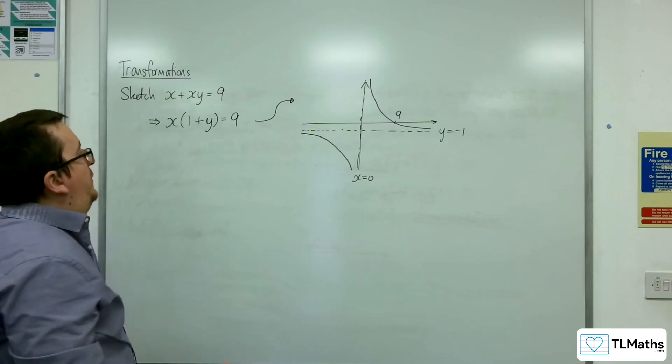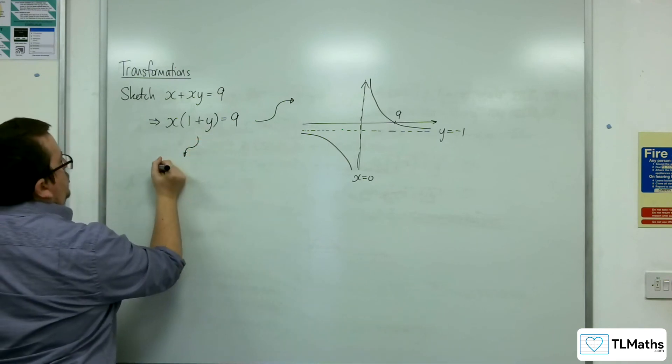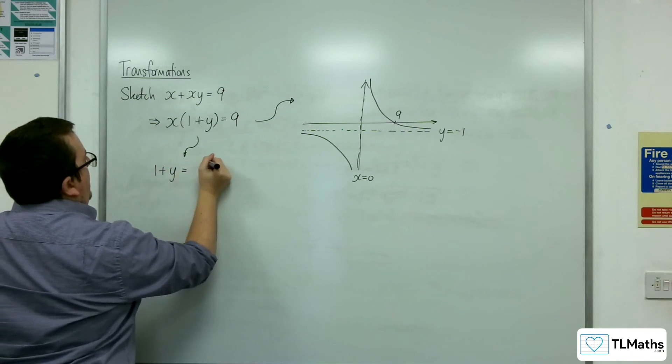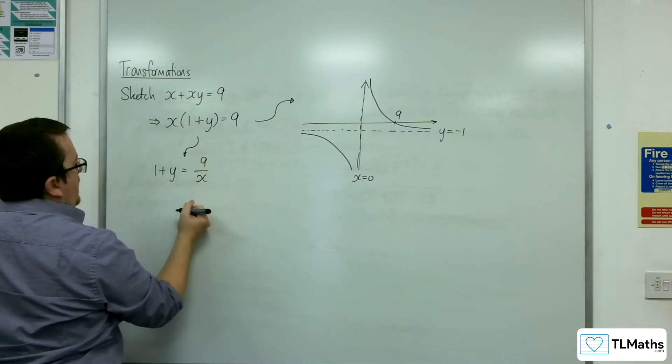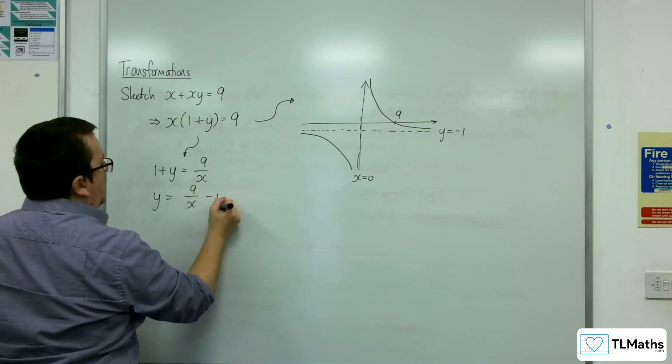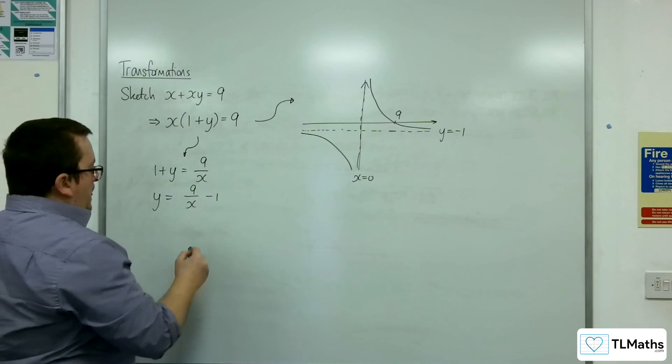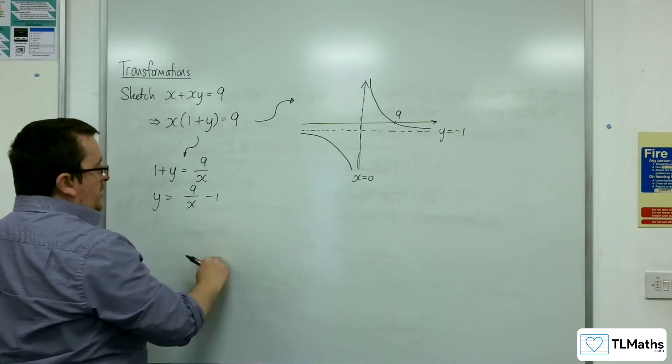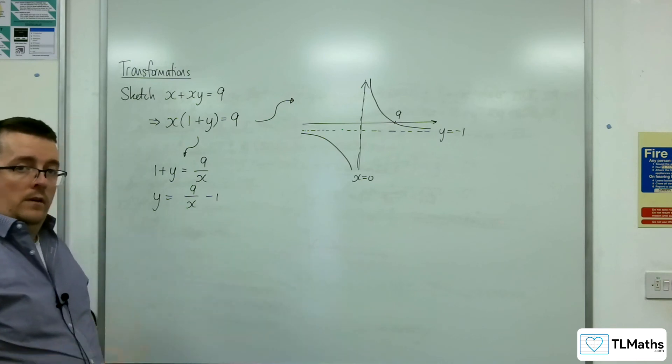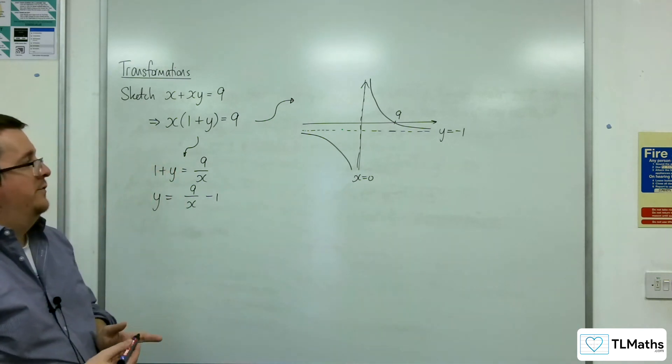My gut instinct, as I said, would be probably to rearrange it to get 9 over x and then y is equal to 9 over x, take away 1. But I know what y equals 9 over x looks like. And I know the minus 1 is just going to drop it one unit down. And so you get precisely the same shaped curve doing that.